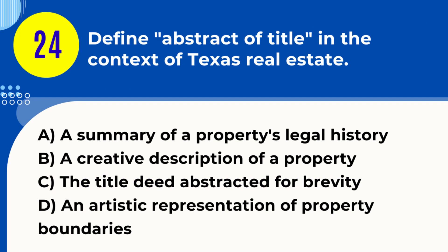Question 24. Define abstract of title in the context of Texas real estate. A. A summary of a property's legal history. B. A creative description of a property. C. The title deed abstracted for brevity. D. An artistic representation of property boundaries. Answer: A. A summary of a property's legal history. Explanation: An abstract of title in Texas real estate is a comprehensive summary that documents the legal history and ownership of a property.